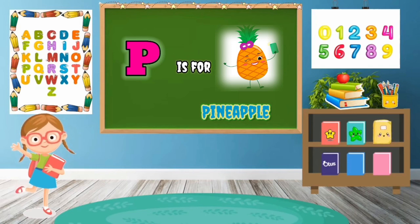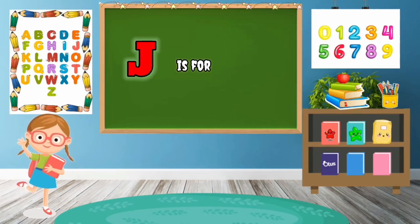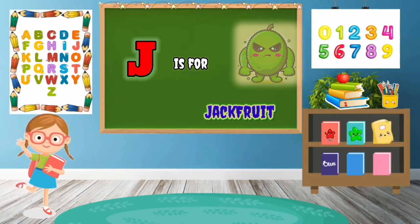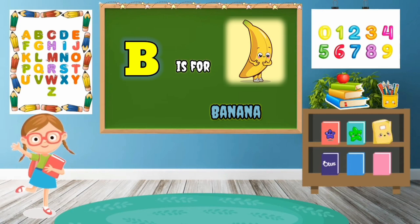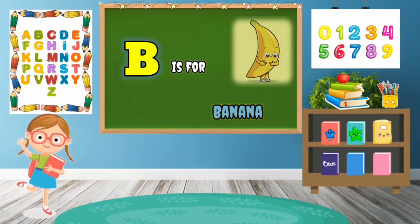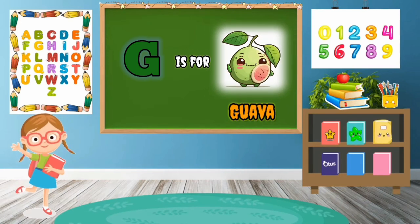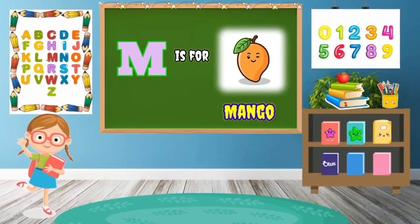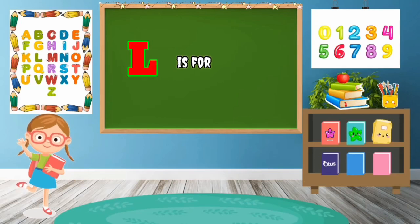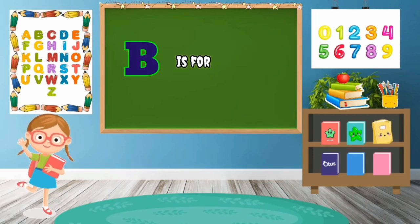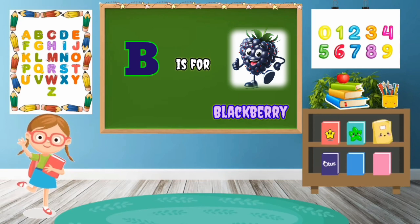P-I-N-E-A-P-P-L-E, Pineapple. J is for Jackfruit — J-A-C-K-F-R-U-I-T, Jackfruit. B is for Banana — B-A-N-A-N-A, Banana. G is for Guava — G-U-A-V-A, Guava. M is for Mango, King of Fruits — M-A-N-G-O, Mango. L is for Lychee — L-I-C-H-I, Lychee. B is for Blackberry — B-L-A-C-K-B-E-R-R-Y, Blackberry.